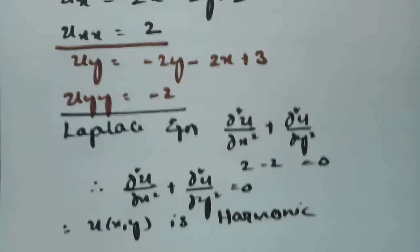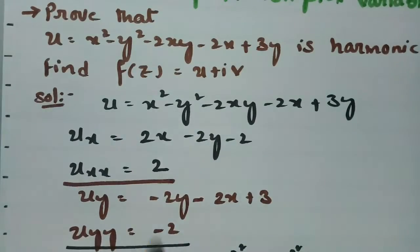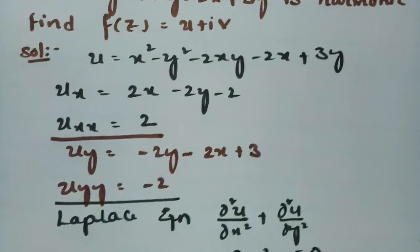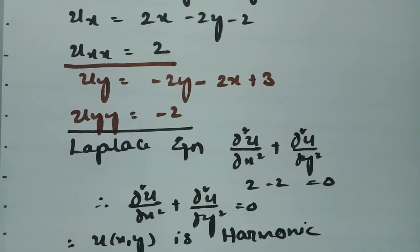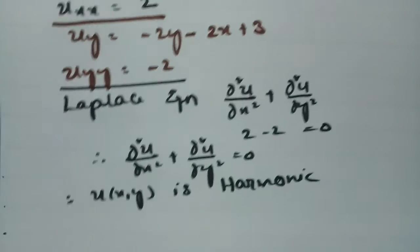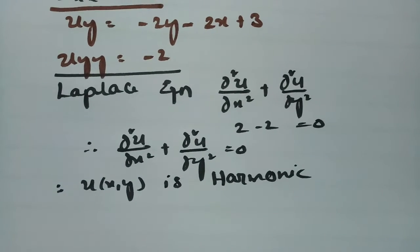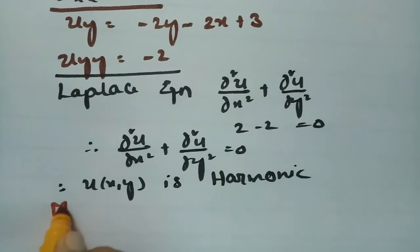Next we have to find the analytic function f(z). I am going to use the Milne-Thomson method. According to the Milne-Thomson method, we proceed as follows.